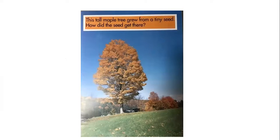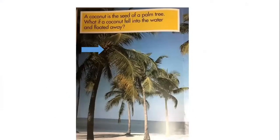This tall maple tree grew from a tiny seed. How did the seed get there? A coconut is the seed of a palm tree. What if a coconut fell into the water and floated away? I showed you with a blue arrow pointing to where the seeds are in that coconut tree. The coconut is the seed, and if it falls into the water, the water will carry it somewhere. When it lands on a beach or somewhere it can sprout, it will start a new palm or coconut tree.